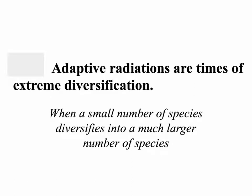Adaptive radiations are times of extreme diversification when small numbers of species change rapidly into much larger numbers of species. Adaptive radiations are an example of punctuated equilibrium, when one or few species radiate outward and differentiate very rapidly in evolutionary history.